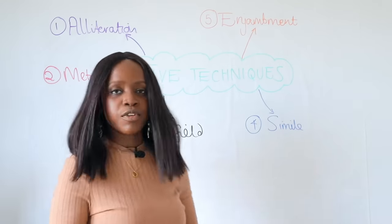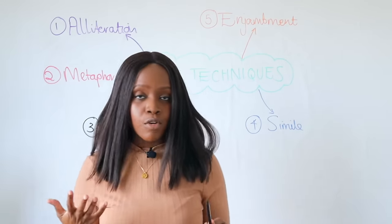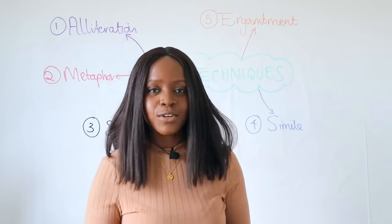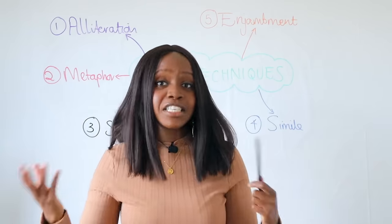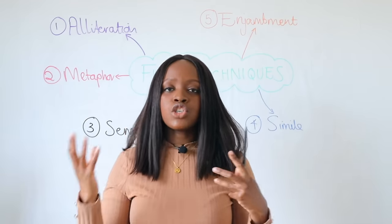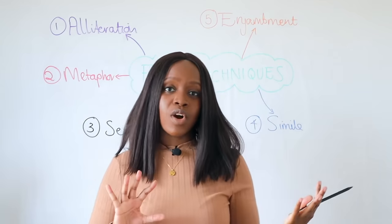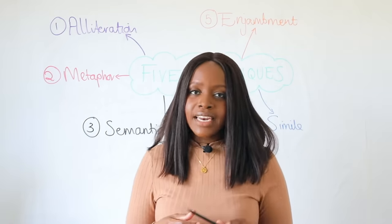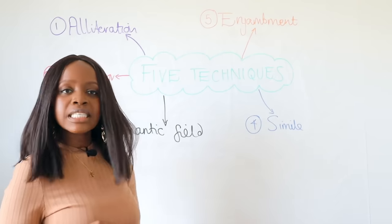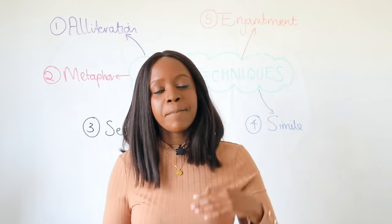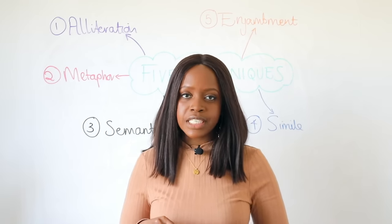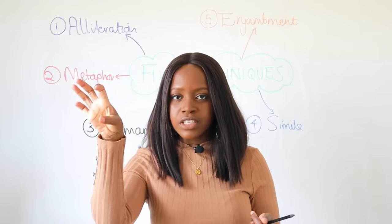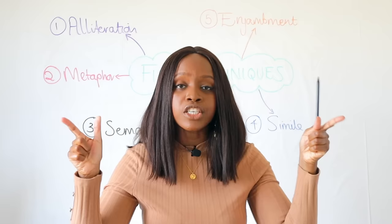The fourth technique is simile — the flip side to metaphor. Simile is when you compare two things using 'like' or 'as,' for instance 'as big as a giant,' 'as flat as a surface,' 'as white as a cloud,' 'as white as a pearl,' 'as red as blood.' Similes are a very popular technique with poets, and it's one you can always bank on coming up in any poem. When you look at a poem, especially one you've never seen before, look for 'as' or 'like' being used in a comparison.